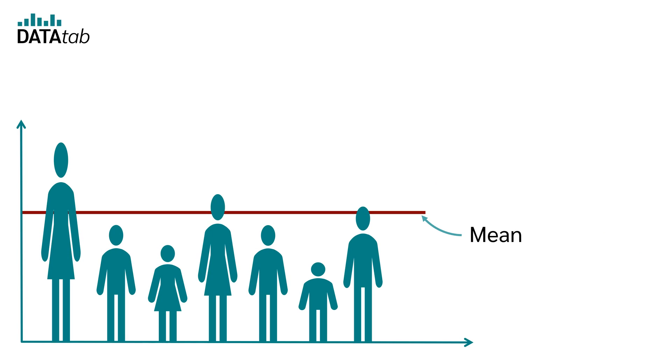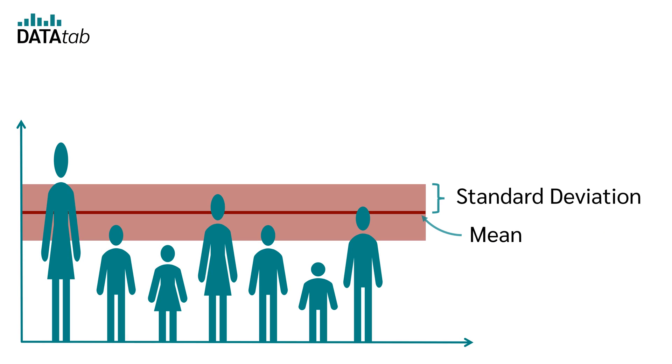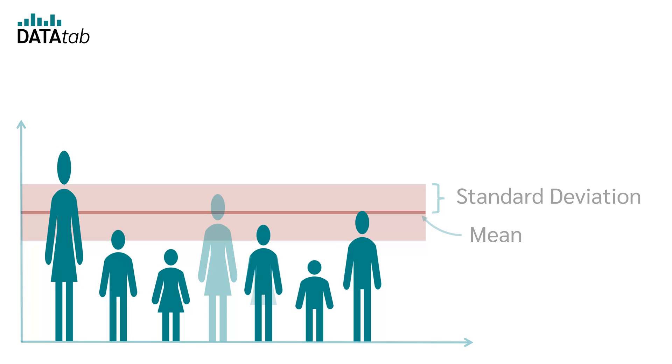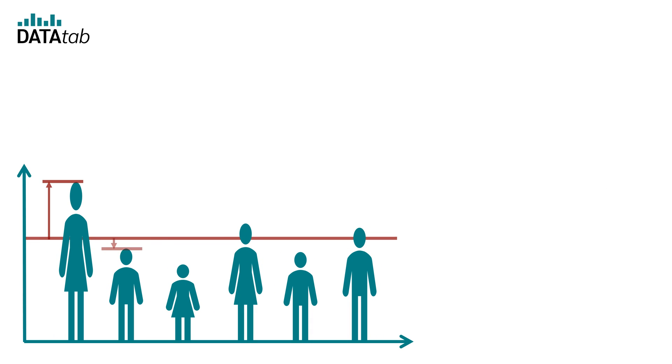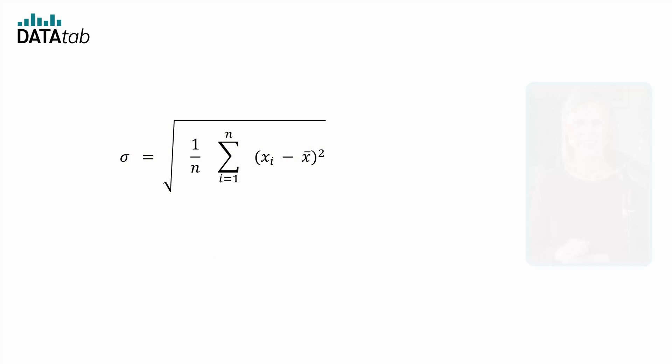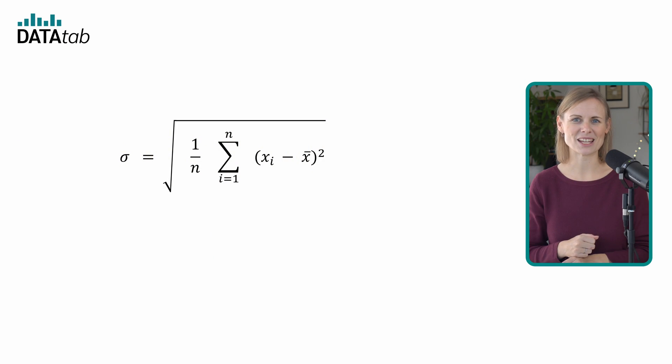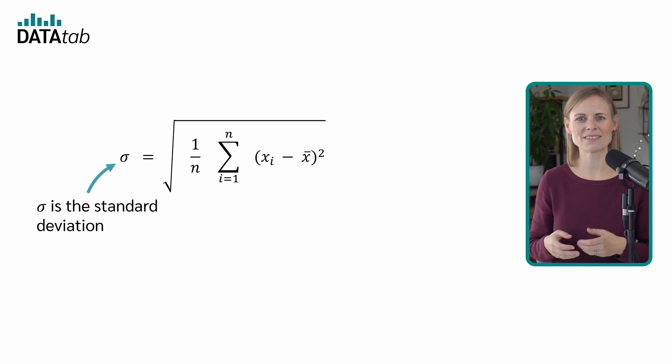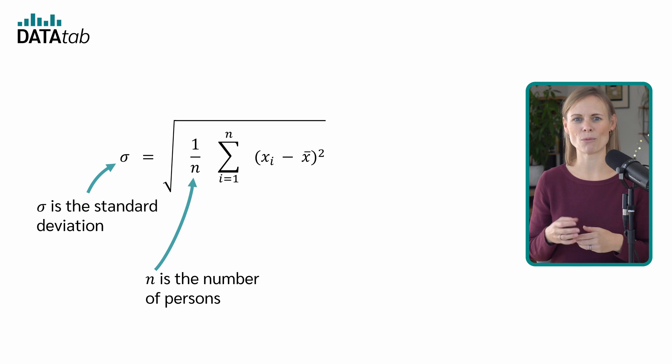Let's start with the standard deviation. The standard deviation indicates the average distance between each data point and the mean. But slowly, each person has some deviation from the mean. Now we want to know how much the persons deviate from the mean value on average. To calculate the standard deviation, we can use this equation. Sigma is the standard deviation, n is the number of persons, xi is the size of each person, and x-bar is the mean value of all persons.